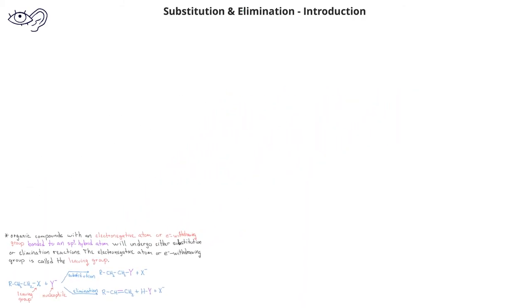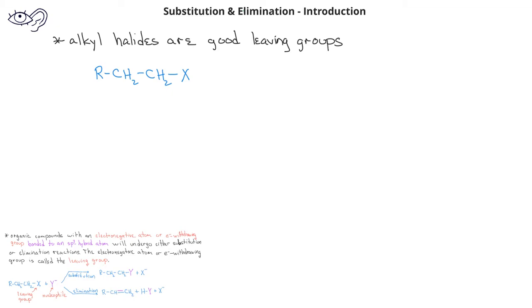Very often, we'll use alkyl halides as the reactants because the halogens are very good examples of leaving groups. When we have a halogen bonded to a carbon, the halogens being very electronegative result in a very polar bond with the leaving group, the halogen, having a partial negative charge and the carbon bonded to the halogen having a partial positive charge.